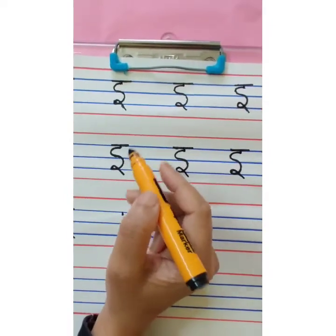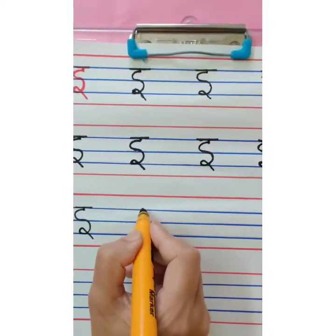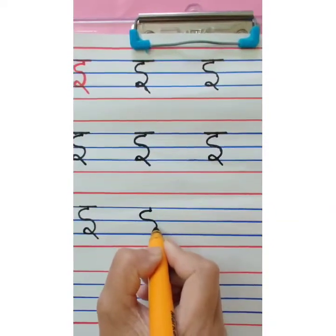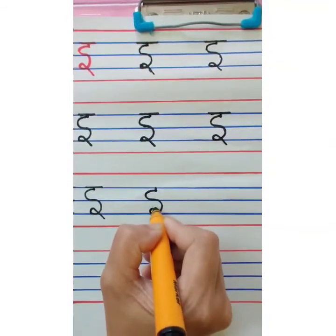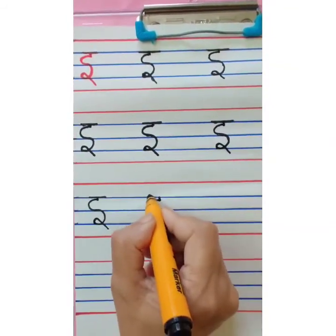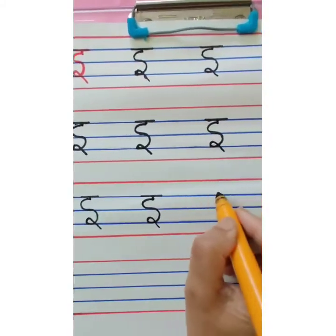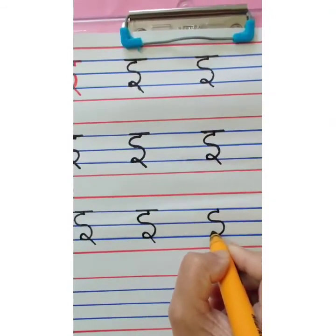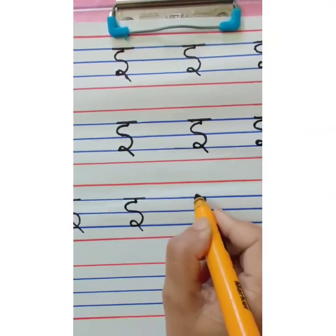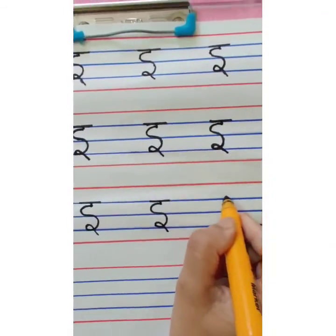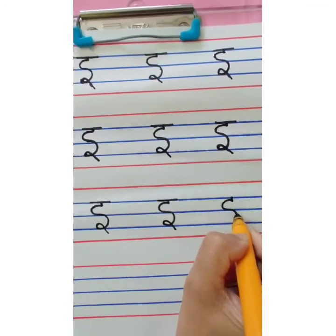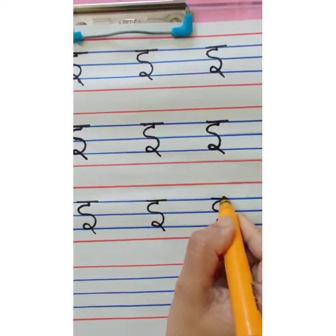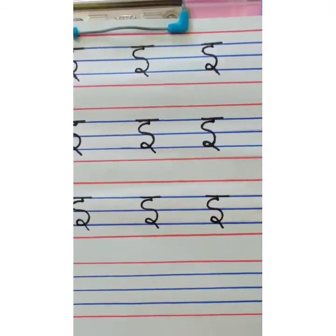This way you are going to complete your tracing rows, and then you are going to write independently. Small standing line, then write s — first c, touch the second blue line, then ulta c. Go up, small loop, and then overhead, small sleeping line. Choti e. This way you are going to complete the page.